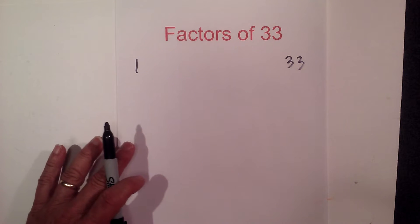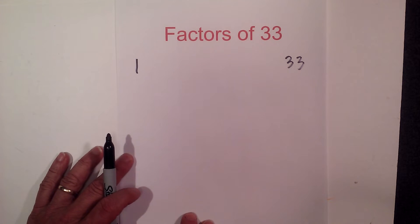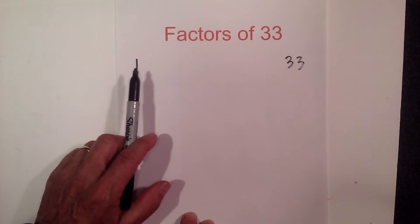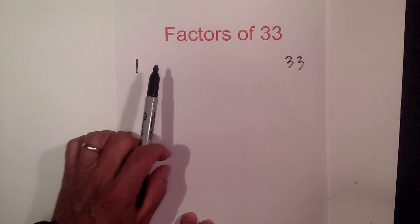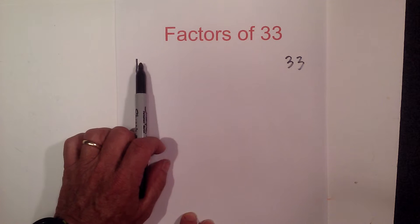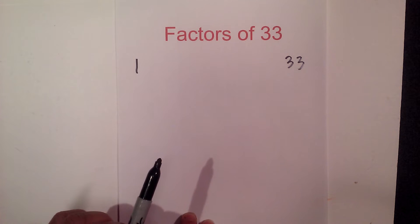Today we're finding the factors, prime factors, and multiples of 33. To find the factors, I start with writing 1 times 33, then I find the numbers in between 1 and 33 that multiply together to equal 33.